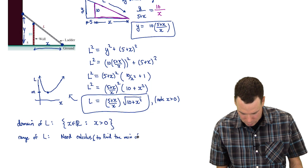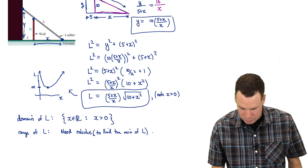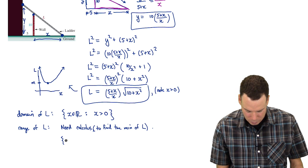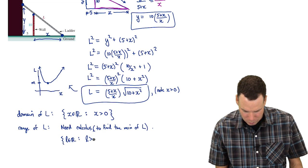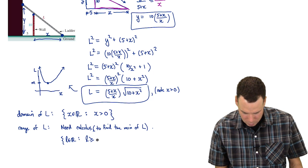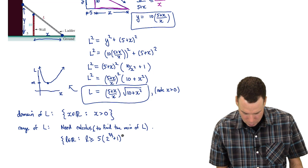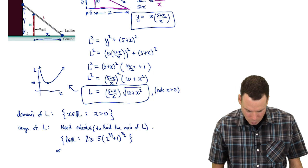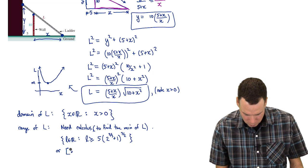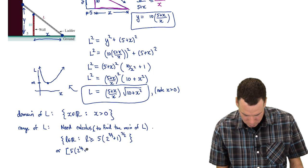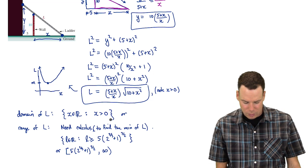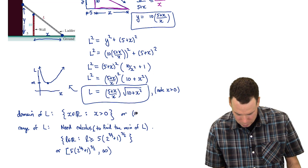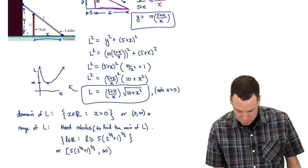So we won't be able to solve this problem here but I can certainly write down what the answer is. So we need calculus in particular to find the min of L. But if we've done that then we'll find that the range is the set of all L in R such that L is bigger than or equal to the minimum value which is 5(2^(2/3) + 1)^(3/2). Or if we wanted to write it in terms of an interval it would be [5(2^(2/3) + 1)^(3/2), ∞). And similarly I could write this as the domain in terms of an interval. It would be the set of all numbers from (0, ∞).